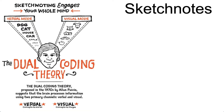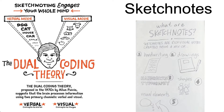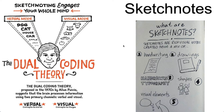A hands-on example related to dual coding theory is sketchnoting, where a listener engages both the verbal and visual parts of the brain to summarize important information and concepts into meaningful diagrams and text. Research shows that instead of typing the most complete notes possible, people remember better when they summarize what they're hearing or seeing, make little diagrams — they don't have to be pretty, just meaningful — and annotate them. The drawing and annotation results in better recall than thorough laptop note-taking.